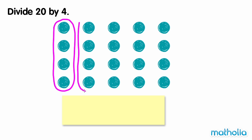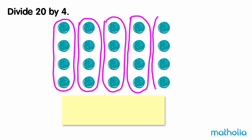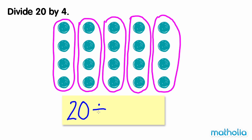One, two, three, four, five. There are five groups of four dots. So twenty divided by four equals five.